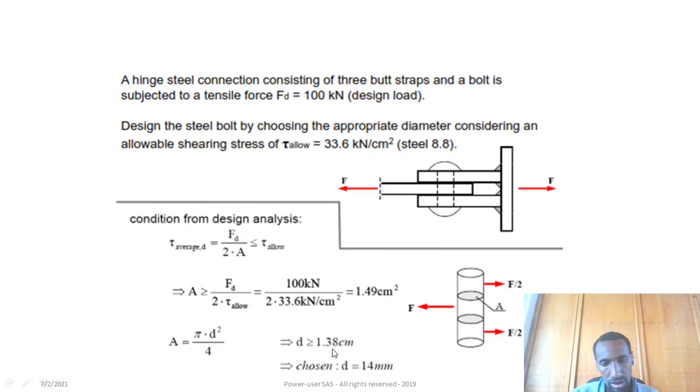For a circular bolt, the area equals πd²/4. So d² = 4A/π = 1.38 cm², giving d = 1.38 cm. The appropriate dimension is 1.4 cm or 14 mm.